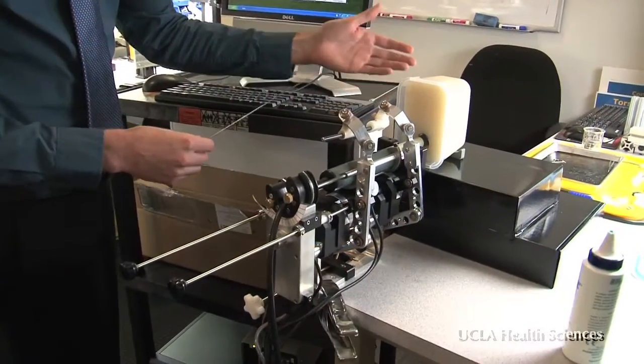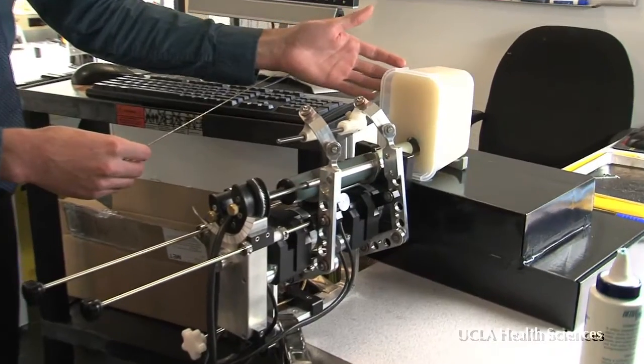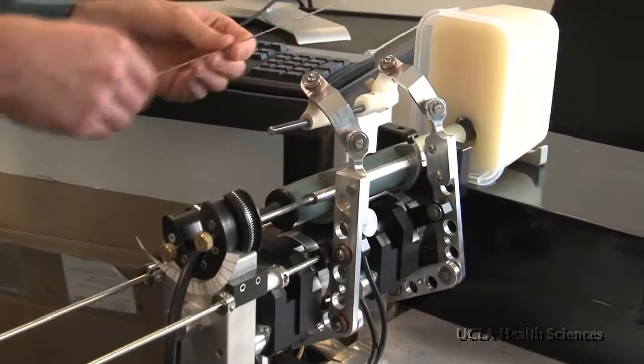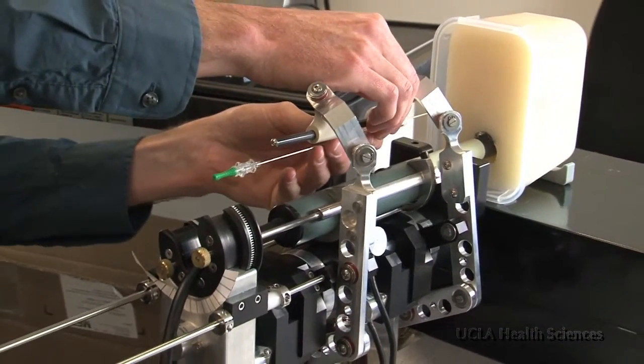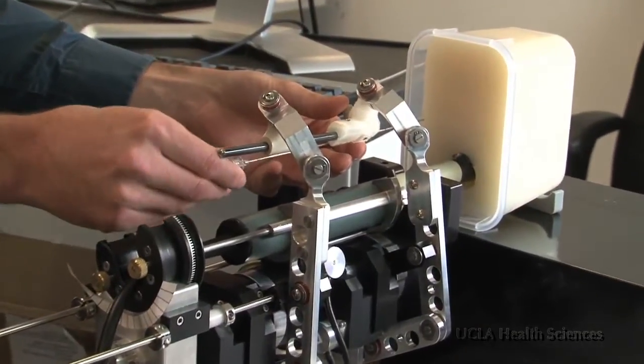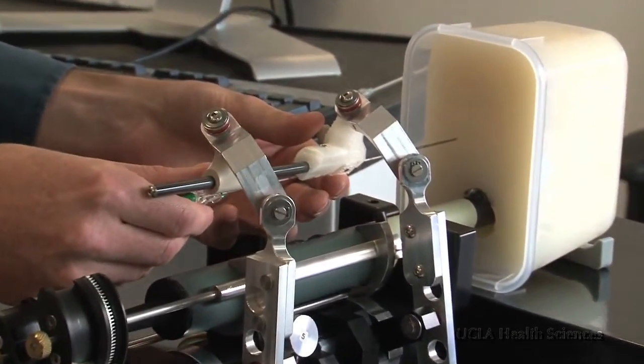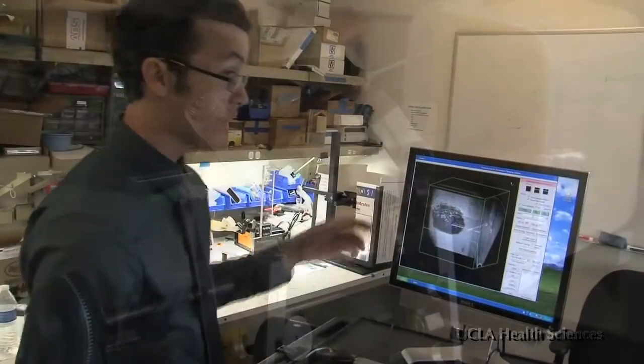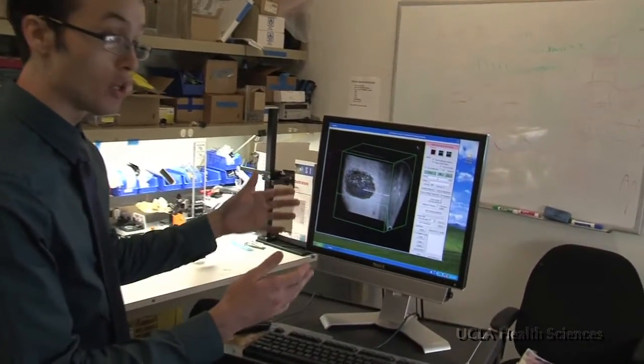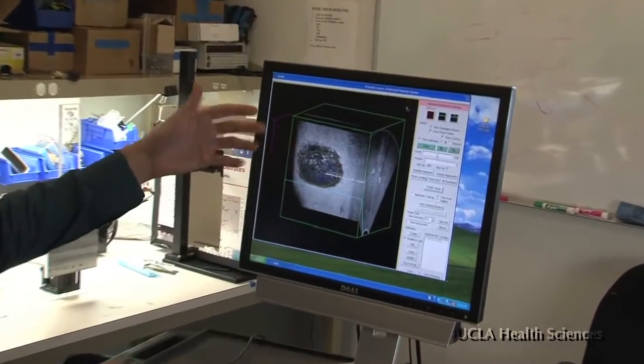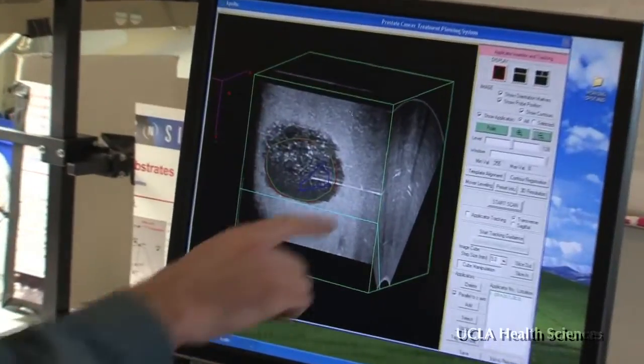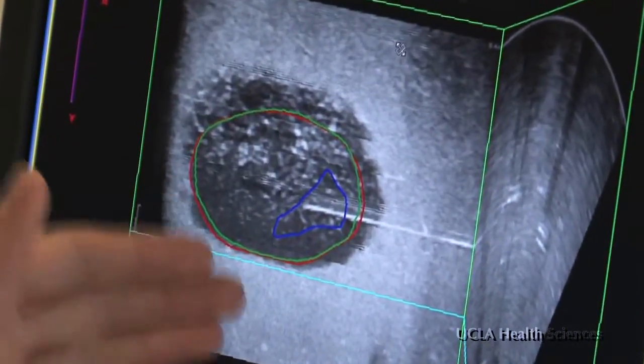This is what we call a prostate phantom. It's a simulated prostate made of agar, a kind of gel. This is a needle going into the prostate that we can then insert into the target. In this blue outline here, that's the actual tumor that's been fused onto the ultrasound scan. This white streak here is a needle that's going directly into the target.